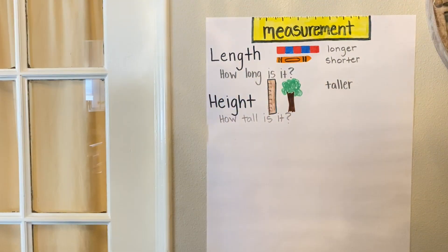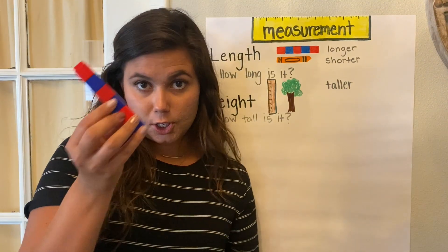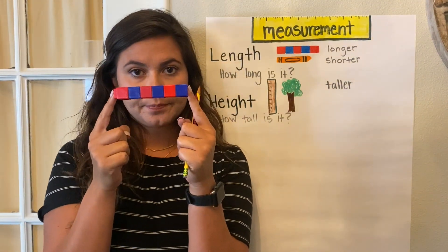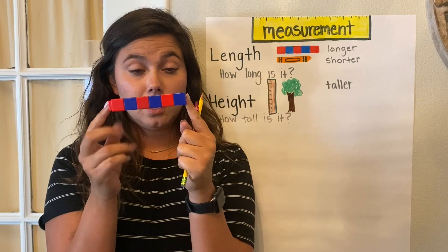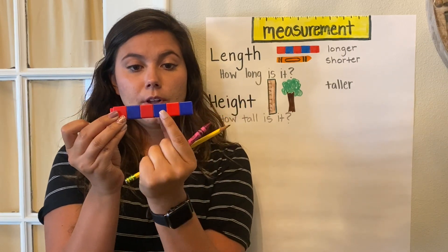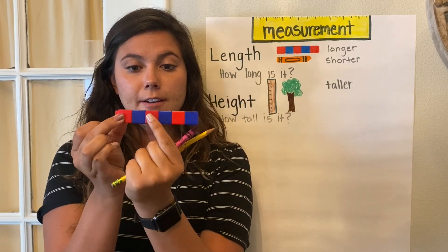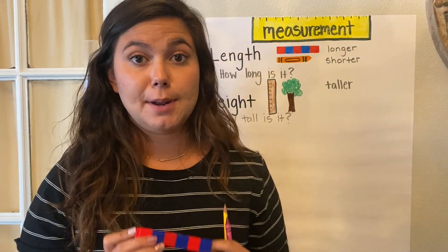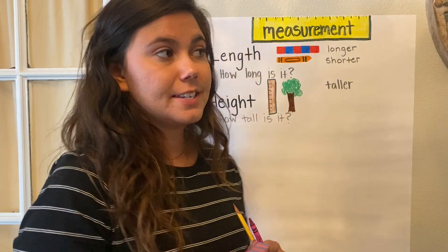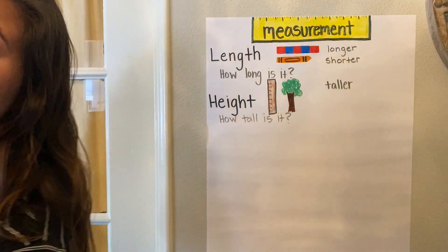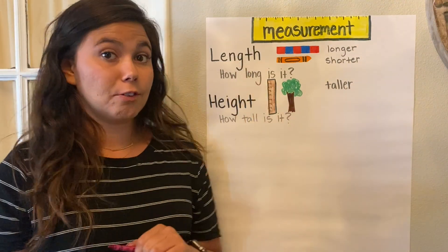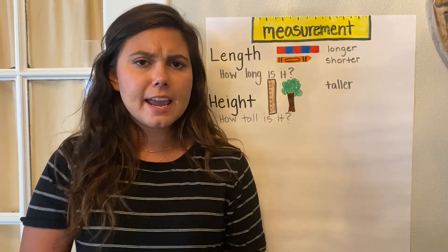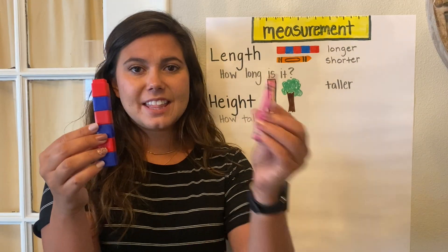Now I have a challenge for you. I made a little cube train. Count how many cubes are in my train. One, two, three, four, five, six - six cubes in my train. Now we're going to compare the length - that's how long it is - the length of the cube train and the crayon. Which one is longer?